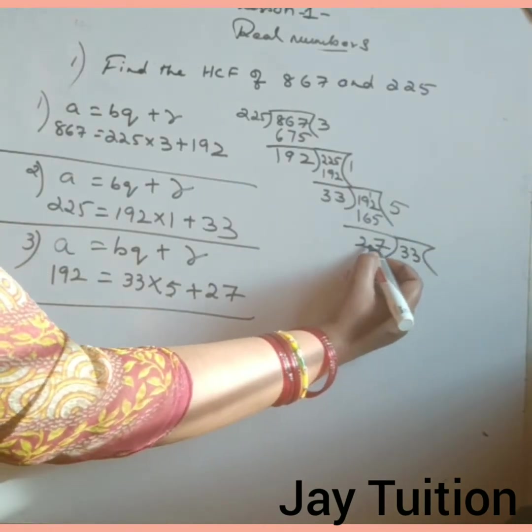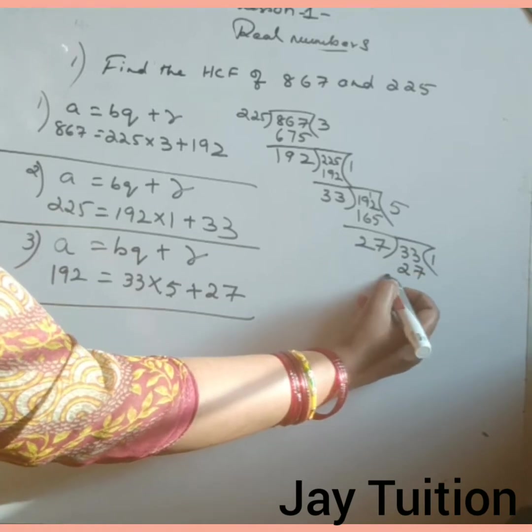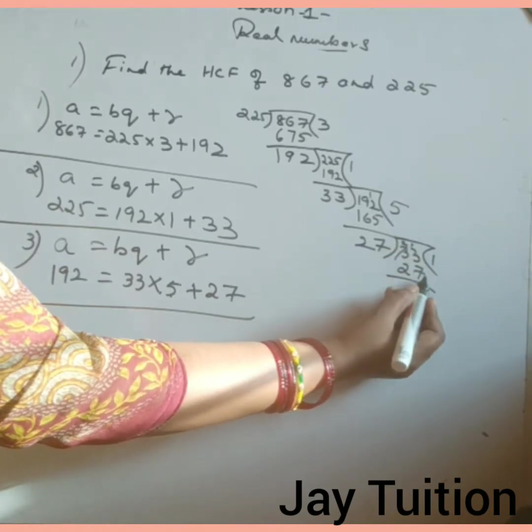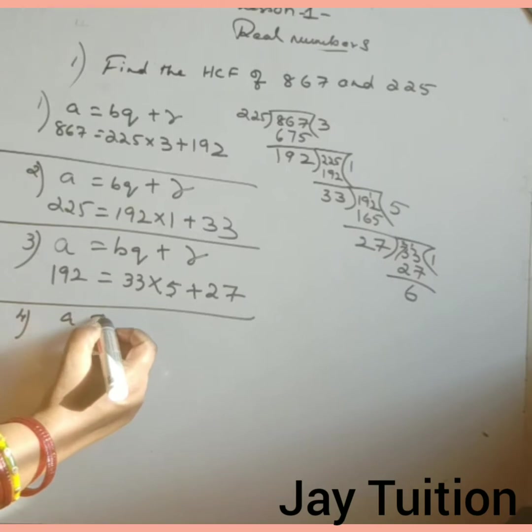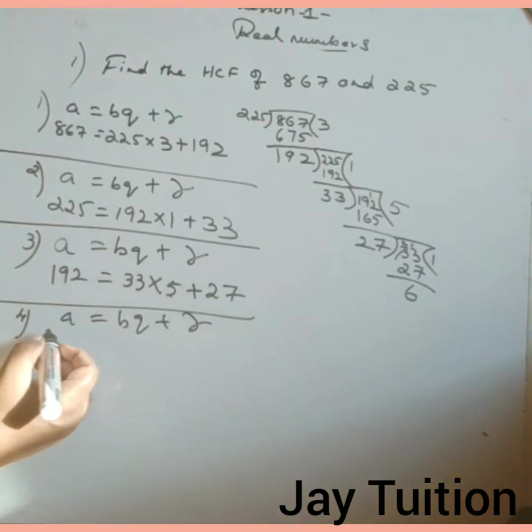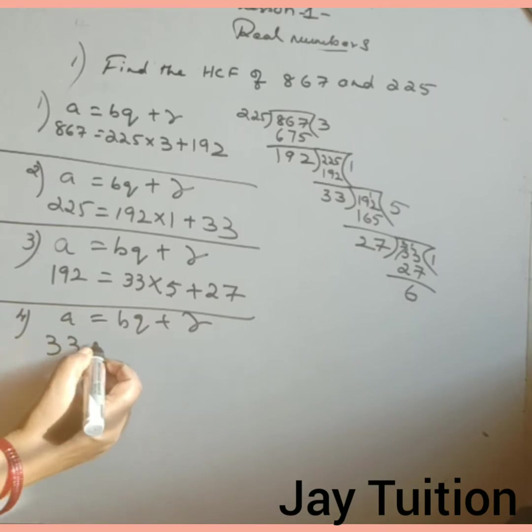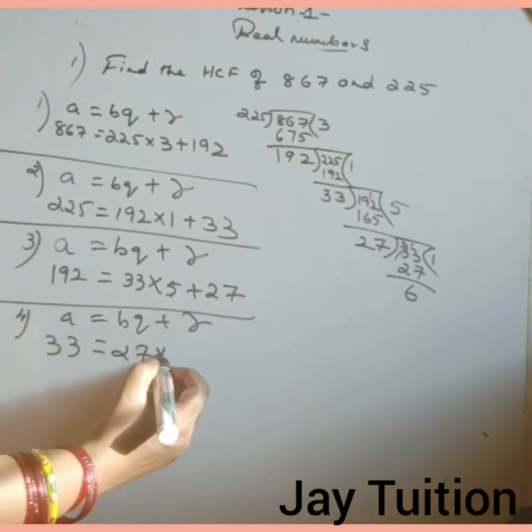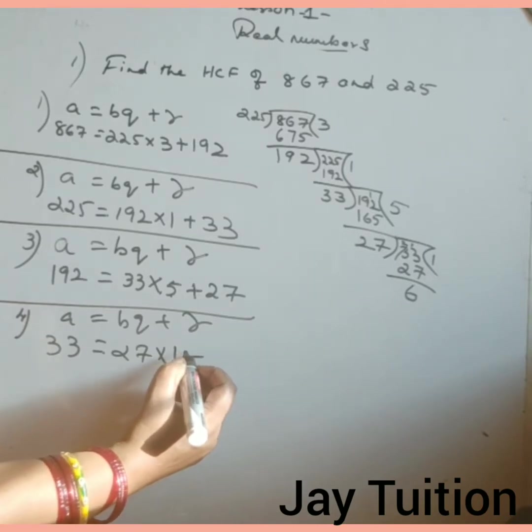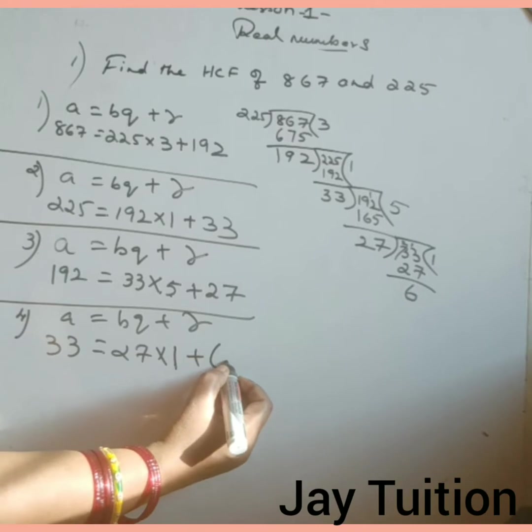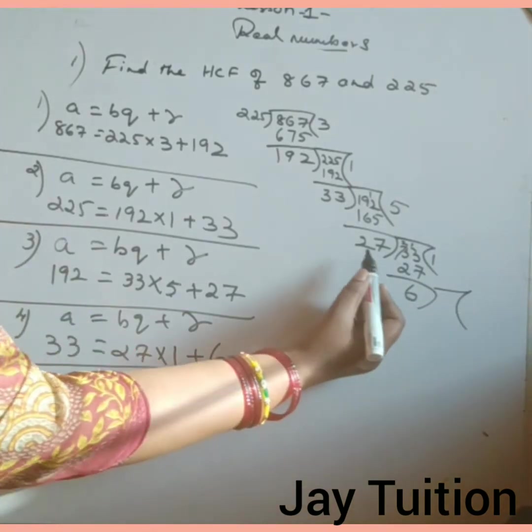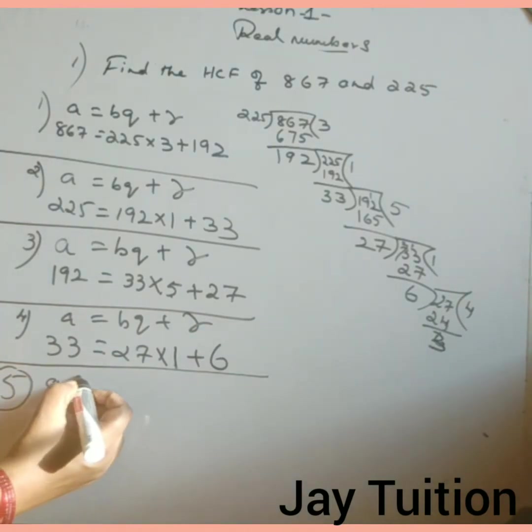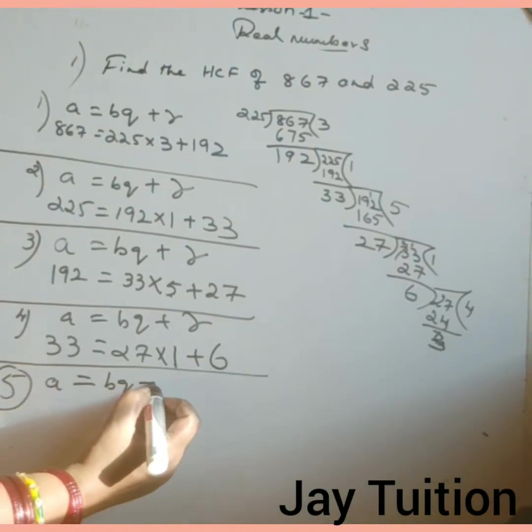Now 33 divided by 27 goes one time. 13 minus 7, you will get 6. Fourth step: A equals to BQ plus R. A is 33, B is 27, quotient is 1 and remainder is 6. If you solve this, you will get 33. Fifth step, again same.